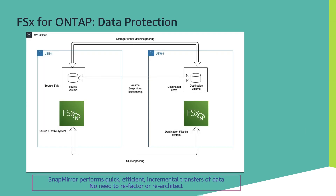This is an architecture diagram of SnapMirror between the primary file system and the secondary file system. To get this set up, you need to ensure that the VPCs in both accounts are peered, and the routes are in place for these two file systems to communicate to each other. Once VPC peering is complete, we move on to cluster peering, where you are letting both file systems communicate to each other using inter-cluster IP addresses, which are provisioned when your file system gets provisioned. Once cluster peering is completed, we move on to SVM peering or vServer peering.